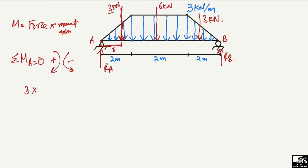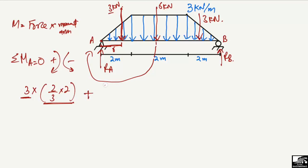So the first term is 3 kN times two-thirds of 2 meters. The second load is 6 kN, also creating a clockwise moment about A. Its moment arm is the distance from A to the centroid of the rectangle: 2 meters (first segment) plus half of 2 meters (1 meter) = 3 meters total. So the second term is 6 kN times 3 meters.